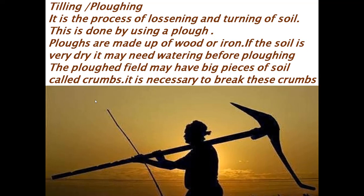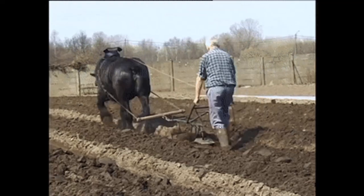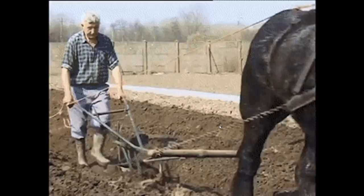The very important process followed in preparation of soil is tilling and plowing. Tilling and plowing is an important process of loosening and turning of soil, done by using the plow. As you can see here, a farmer carrying a plow — this instrument is called a plow, and plows are made of wood or iron. If the soil is very dry, it may need watering before plowing, so that the soil gets loosened well and plowing becomes easier.